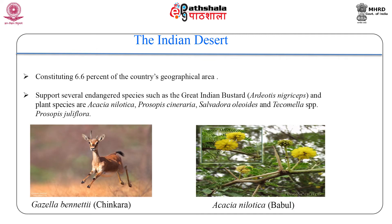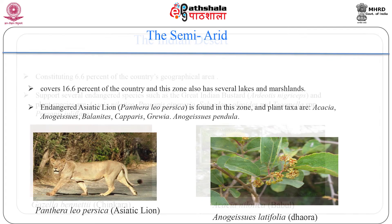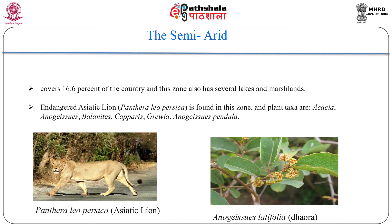The Indian Desert is biogeographically the eastward extension of the Sahara-Arabian desert system, which spread through Iran, Afghanistan, and Baluchistan to the Thar area on the Indo-Pakistan border. This arid zone falls west of the Aravalli hill range and comprises both the salt and sand deserts of northwestern India, consisting of 6.6 percent of the country's geographical area. This zone also has large expanses of grasslands that support several endangered species such as the great Indian bustard. Plant species include Acacia nilotica, Prosopis, Salvadora, and others.